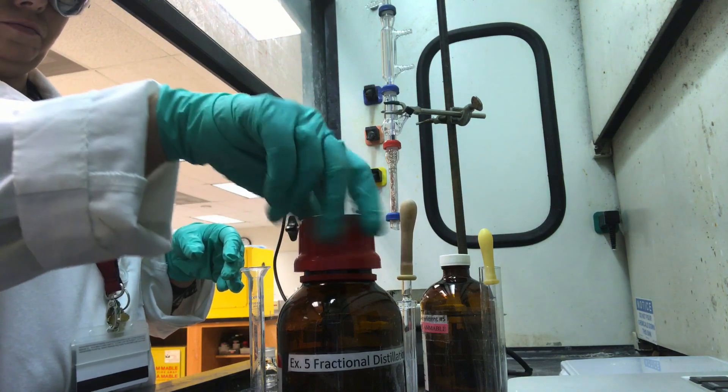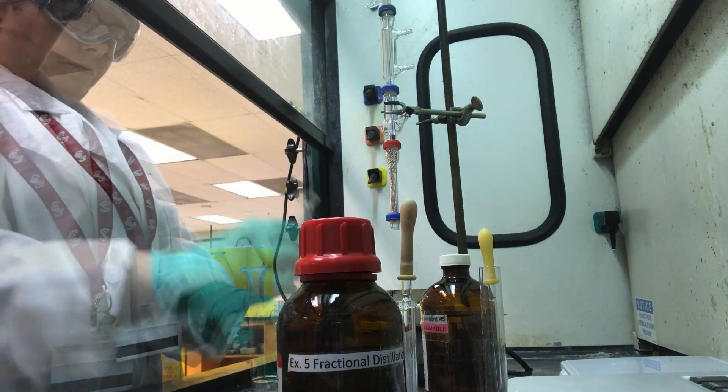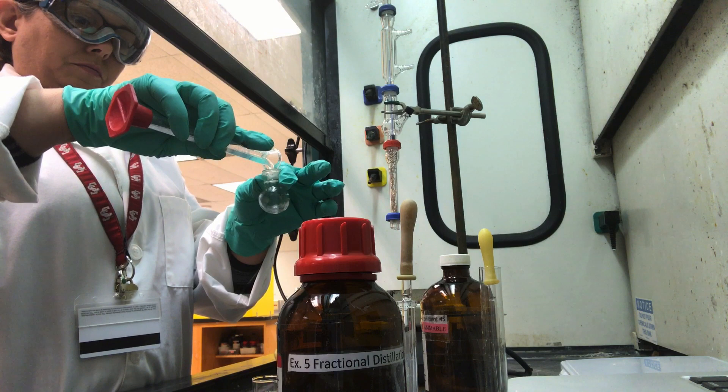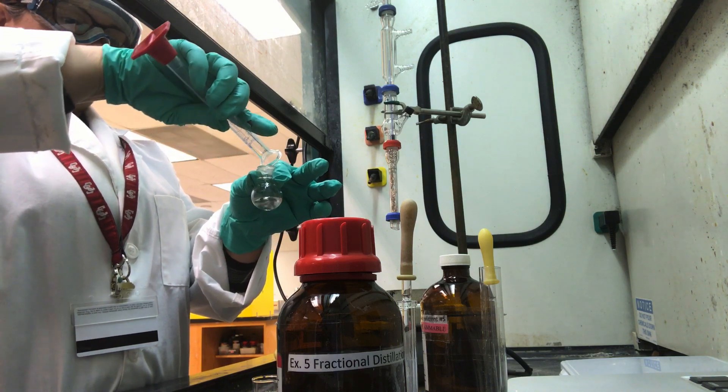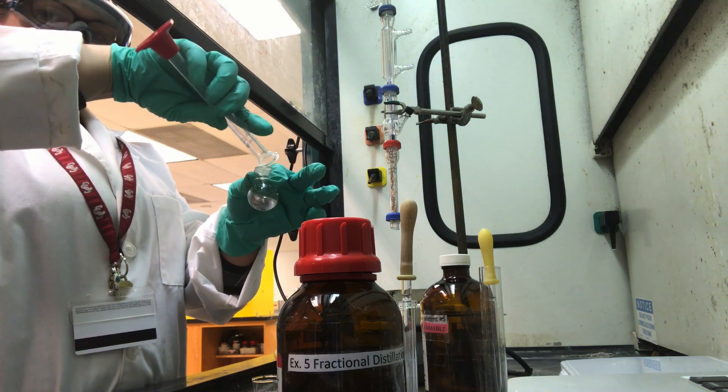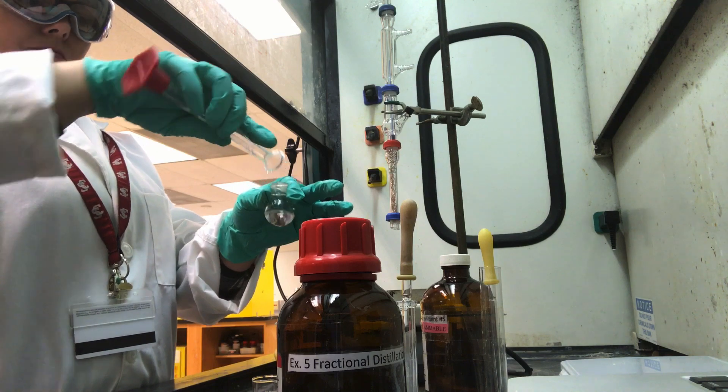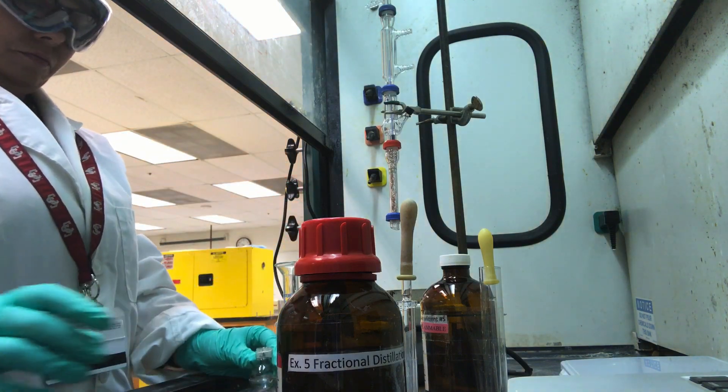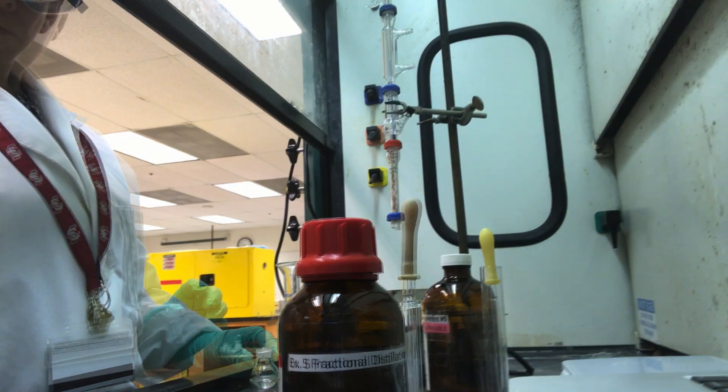Instead, use a small beaker to transfer a small portion of liquid and measure the desired volume from that portion. Be sure to cap all solvent bottles immediately. We do not want to leave them uncapped in the hood. Use the same process to measure 3 milliliters of toluene.